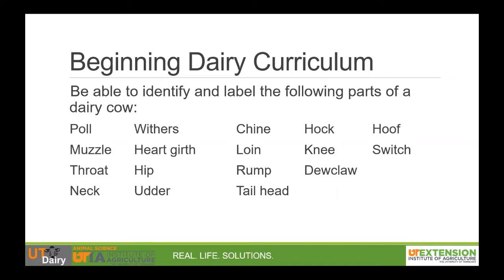They are the pole, muzzle, throat, neck, withers, heart girth, hip, udder, chine, loin, rump, tail head, hock, knee, dewclaw, hoof, and switch.